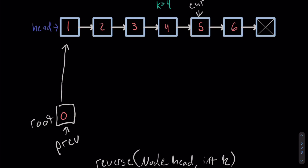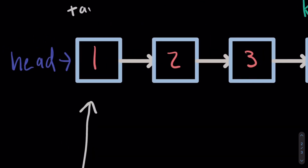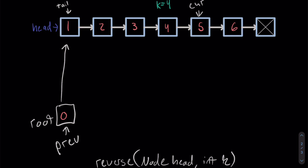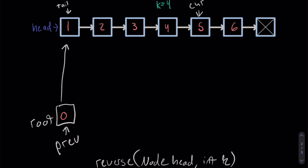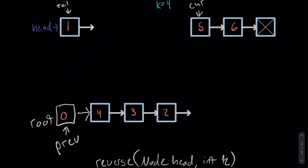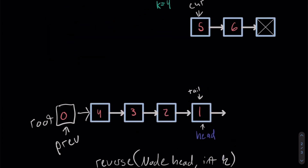Before we do that, we're always going to create a pointer to the start where cur was originally. Once we move cur, all we need to do is call our reverse method with the parameters tail and K. That will reverse this entire sub-list up to the fourth index. So we're going to say prev.next is equal to the reverse of tail. This is what our list looks like after the first iteration. After we reverse it, we're going to say prev is equal to tail.